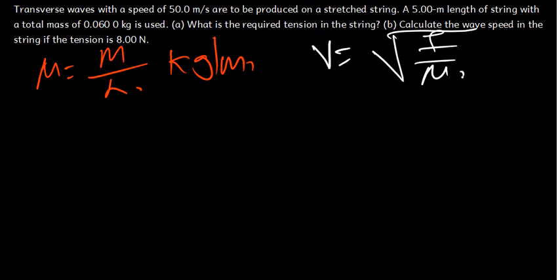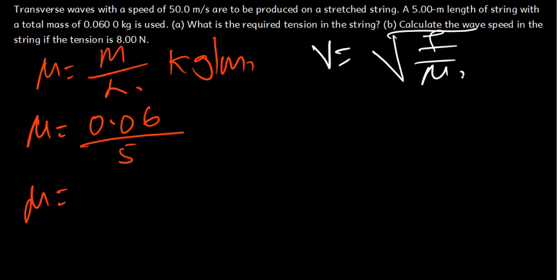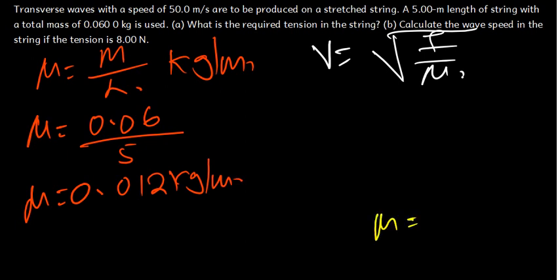We have the velocity — we've been told it is 50 meters per second. We don't know the linear density directly, but we have the mass and length of the string. So let's find the linear density: μ = m/L = 0.06 divided by 5, which gives us 0.012 kg per meter. So our linear density is 0.012 kg per meter.